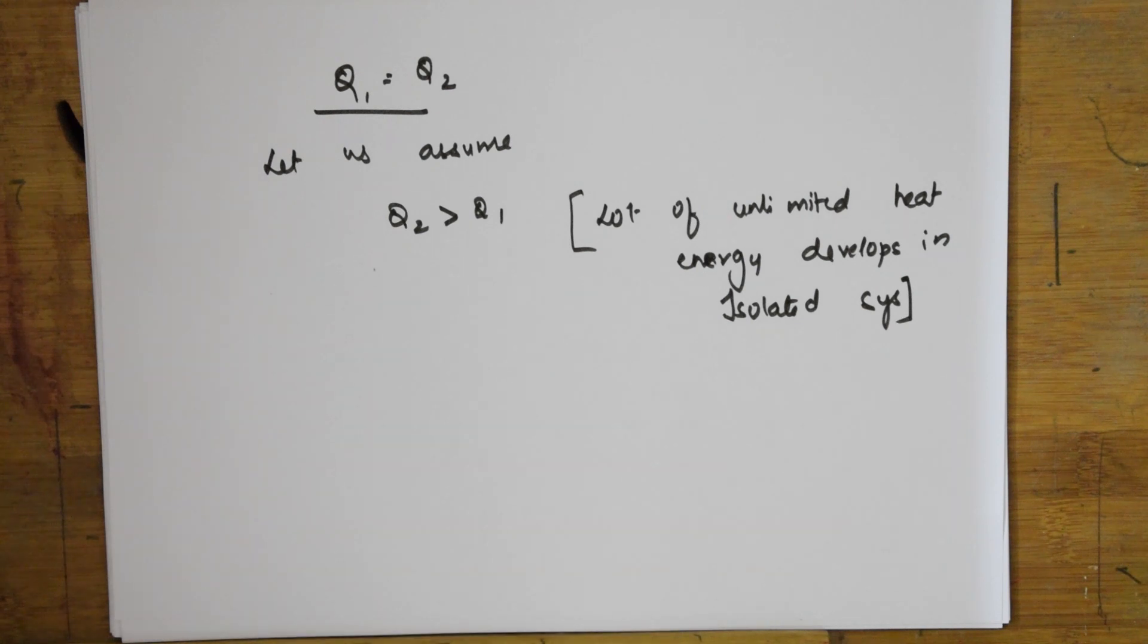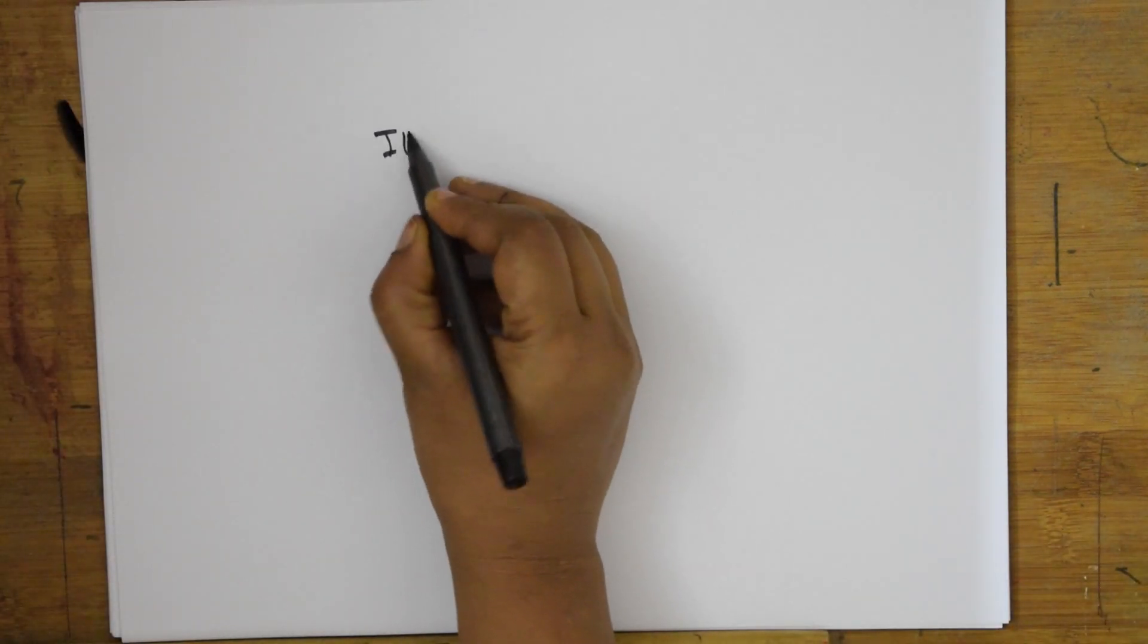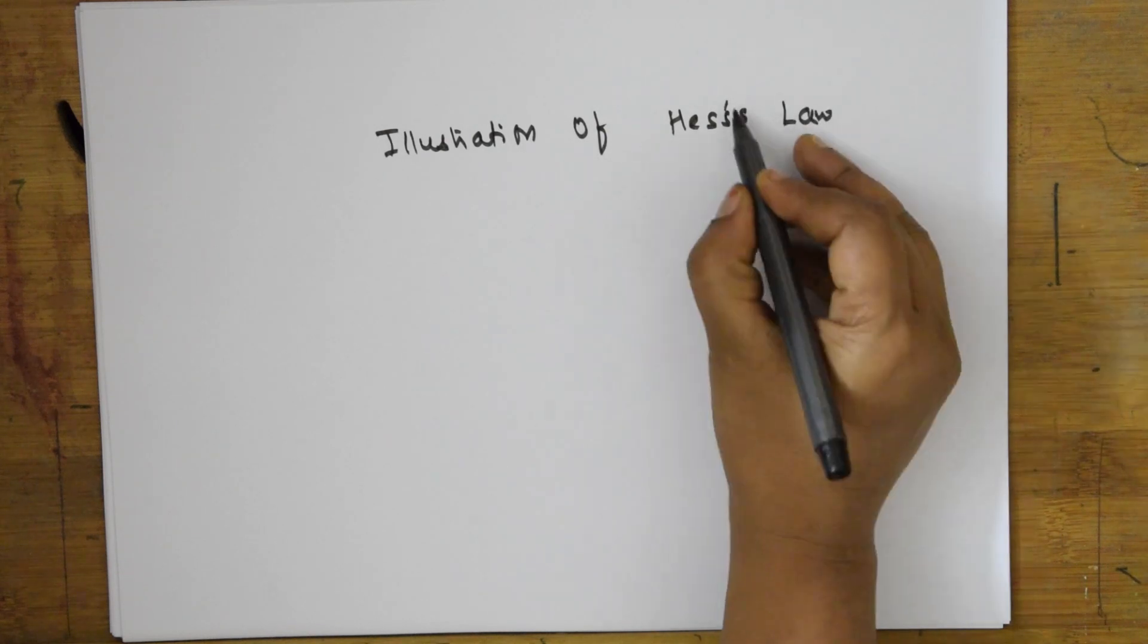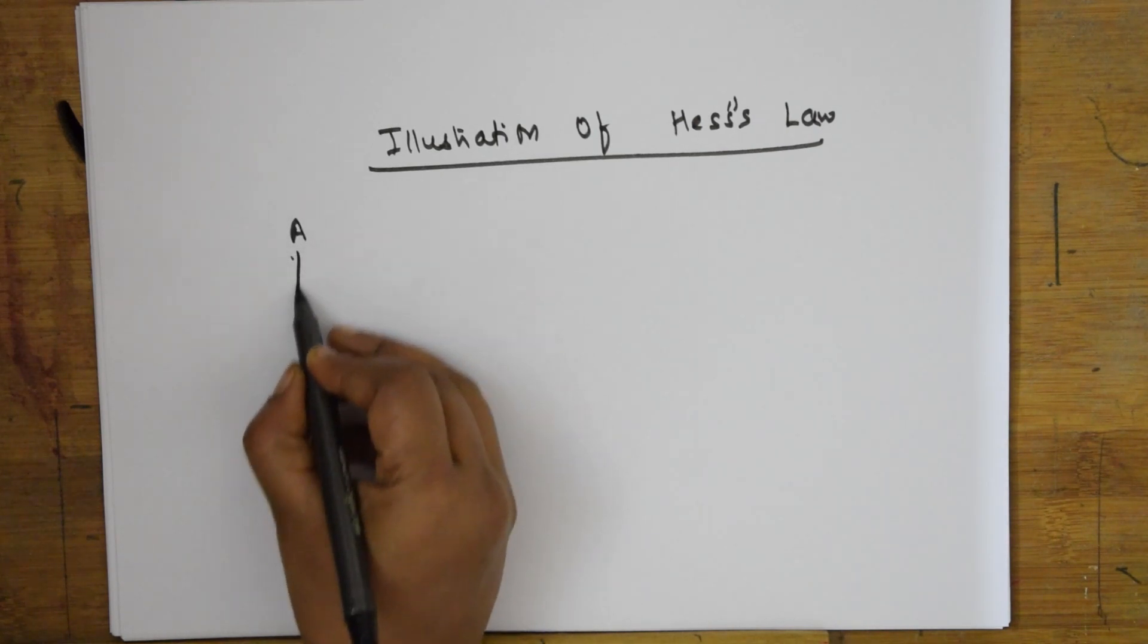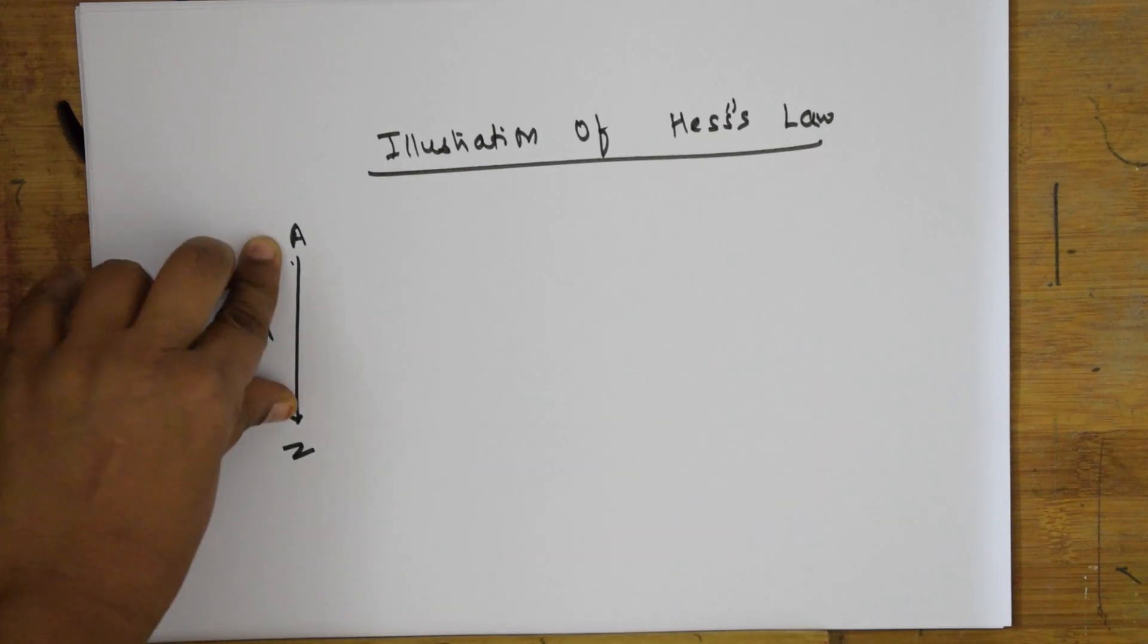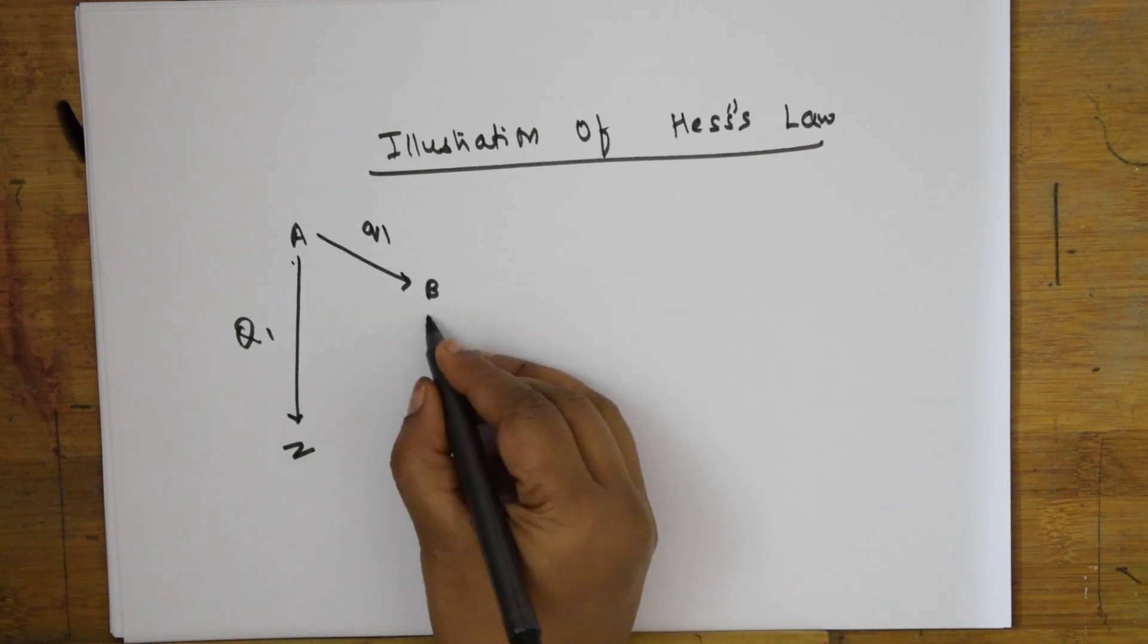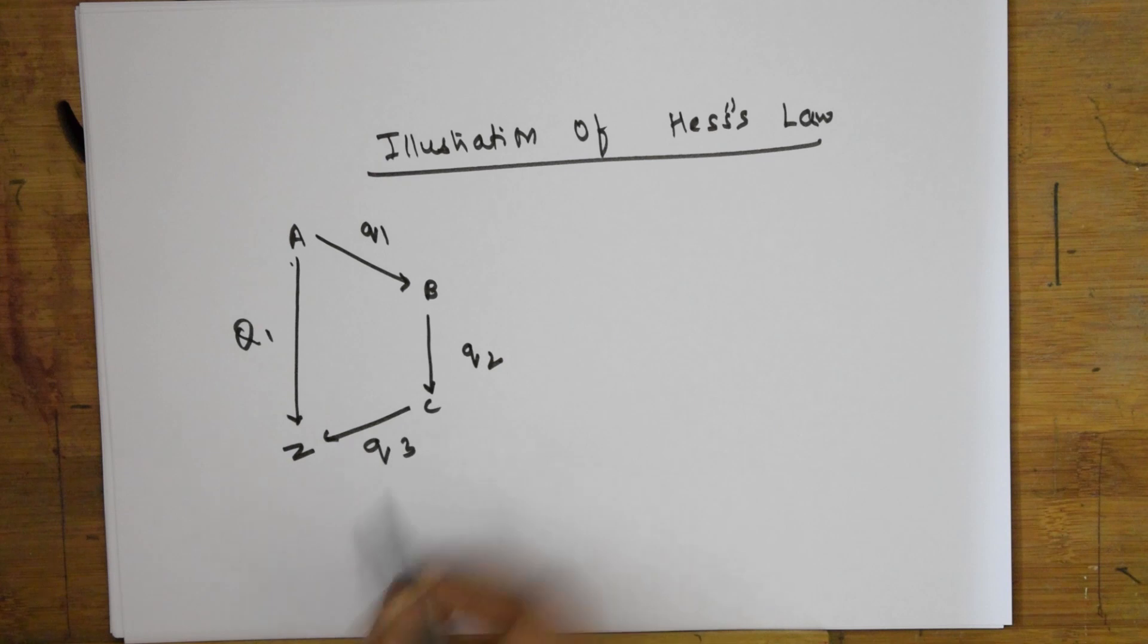Let us take an example. I'm going to illustrate Hess's Law. This is a general illustration. First, A is directly converting into Z, the heat evolved is Q1. If it occurs in different steps: A converting to B, heat evolved is Q1; B converting to C, heat is Q2; C converting to Z, heat evolved is Q3.